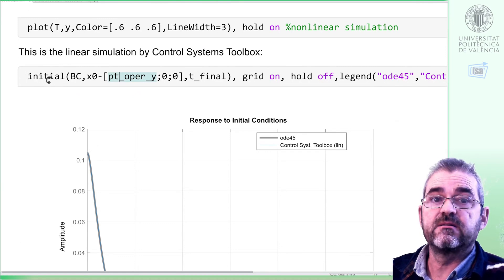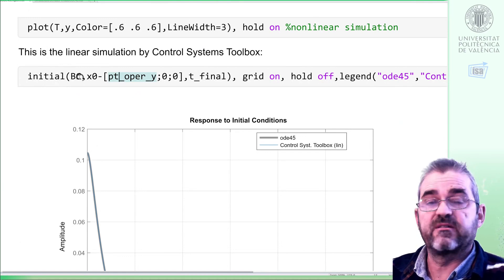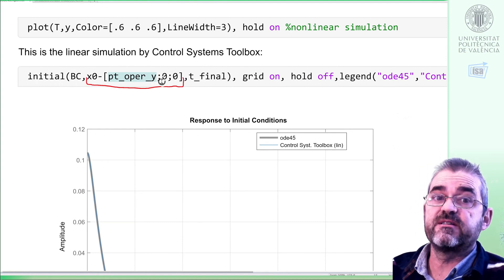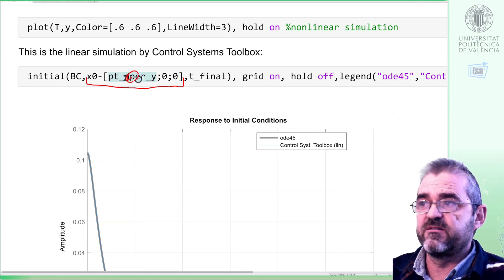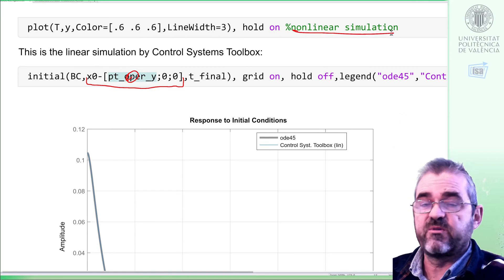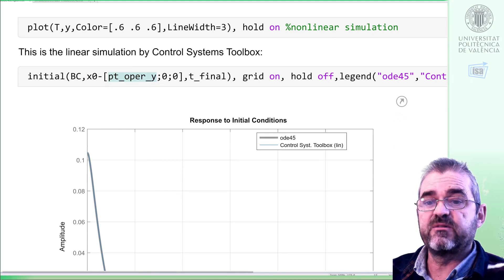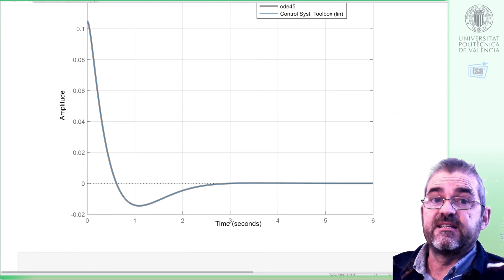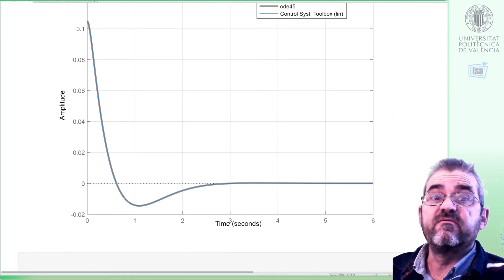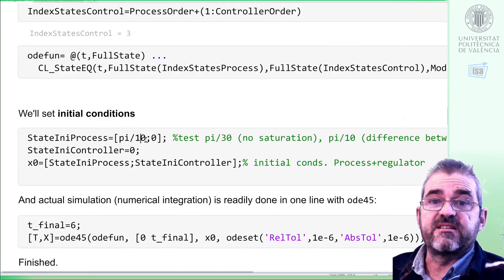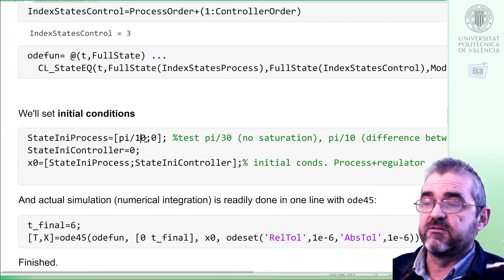And how do I carry out the linear simulation with non-zero initial conditions? Well, with the initial command from the control system toolbox. I put here the closed loop, I put here the initial conditions in incremental coordinates. Luckily, this is actually zero, so units are the same, so I will superimpose with the plots with the nonlinear simulation without any change of variable. And if I compare with ODE45, the nonlinear one, they are coincident because the initial angular displacement was very small, so linearized assumptions were valid.